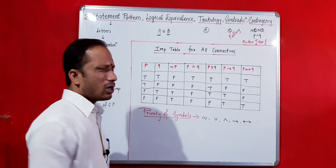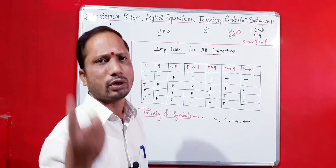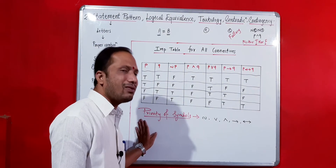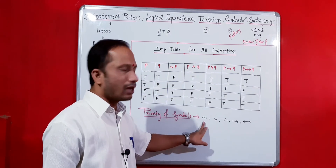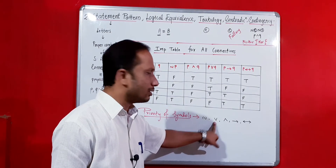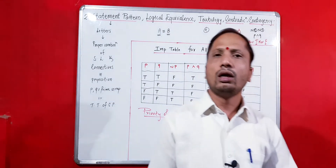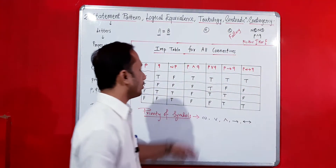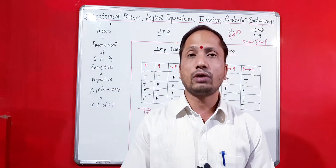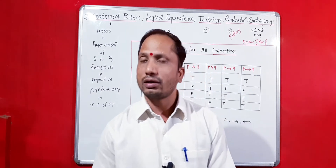These values will help you in your study. The priority of symbols in truth tables is: negation first, then OR, then AND, then IF-THEN (implication), then IF AND ONLY IF (double implication). You should remember these, as they are the basics for making any truth table for a given statement pattern.